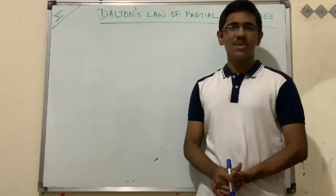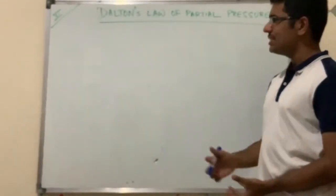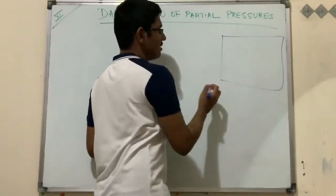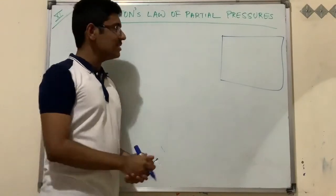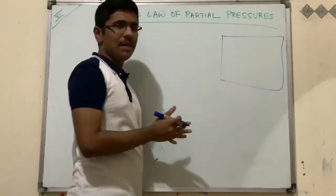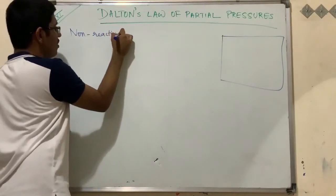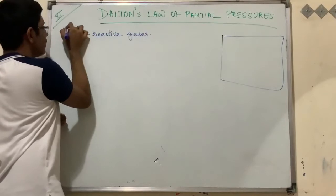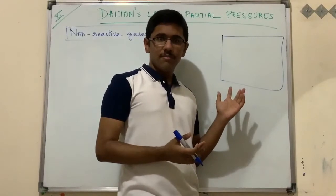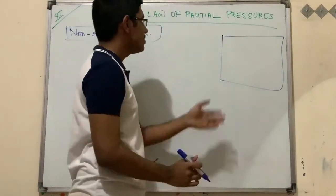We are going to discuss Dalton's law of partial pressure. To understand this, we consider a sealed container — the apparatus Dalton used. In this container, we fill different non-reactive gases. The condition is that the gases must be non-reactive. For example, helium, hydrogen, and other different gases that do not react with each other are filled inside.